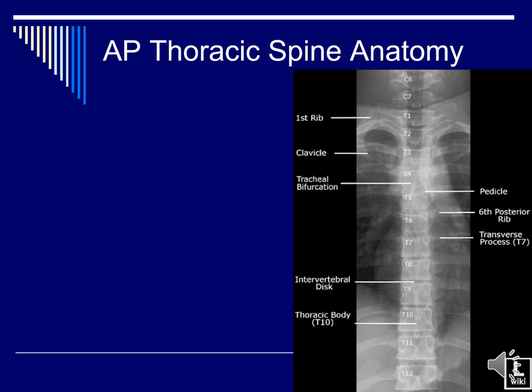On the AP image, you should see from at least C7 down to the entire T12, preferably the top of L1. You should be able to see the spinous processes in the center of the thoracic bodies, and the pedicles equidistant on either side of the body. You should see the articulation of the ribs to the vertebral column, the heart shadow in the center, and the trachea running down with the carina — the bifurcation of the trachea. All of these should be visible on your radiograph with no motion.